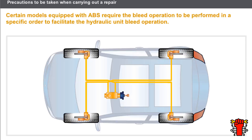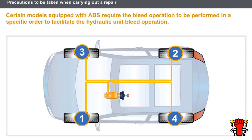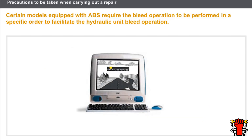The bleed operation for a conventional braking system without ABS consists of bleeding in the following order: the rear right-hand wheel, the front left-hand wheel, the rear left-hand wheel, and the front right-hand wheel. Certain models equipped with ABS require the bleed operation to be performed in a specific order to facilitate the hydraulic unit bleed operation. Please consult the technical documentation for details of the correct bleed procedure and the special tooling required.